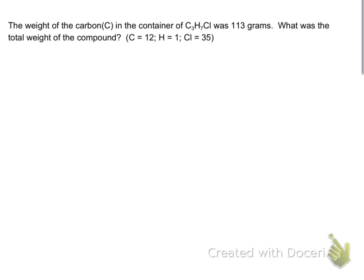This one is called the weight of carbon problem. We have carbon C naturally in the container, the formula C₃H₇Cl. It was 113 grams. So somehow they were able to determine that if I just take the carbon atoms, it happens to be three of them, or three carbon atoms per molecule, and I have a container full of those particular molecules, I have 113 grams of it.